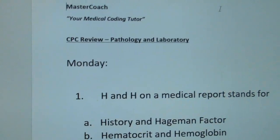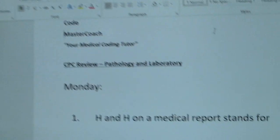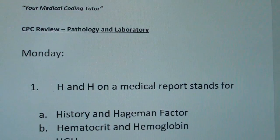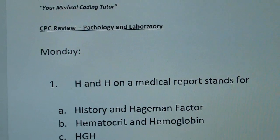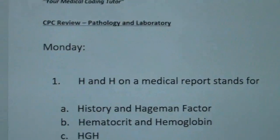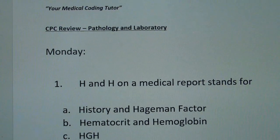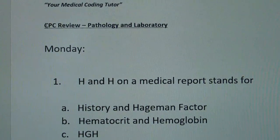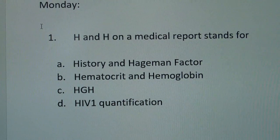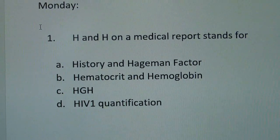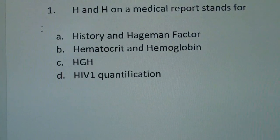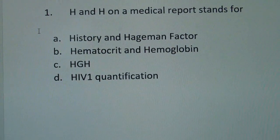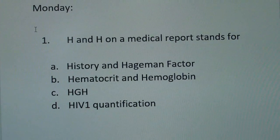Here we go. Your first question: H and H on a medical report stands for — is it A) history and Hageman factor, B) hematocrit and hemoglobin, C) HGH, or D) HIV-1 quantification? Again, the question is: H and H on a medical report stands for?